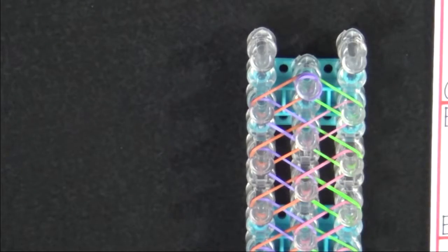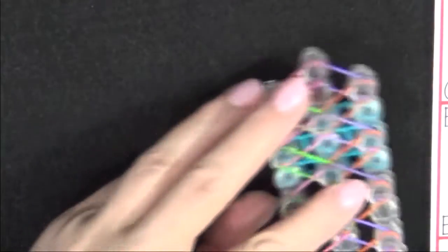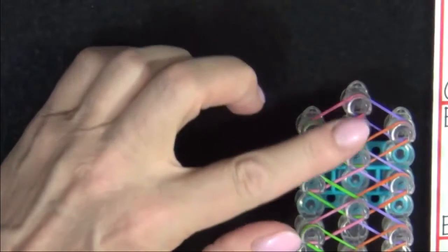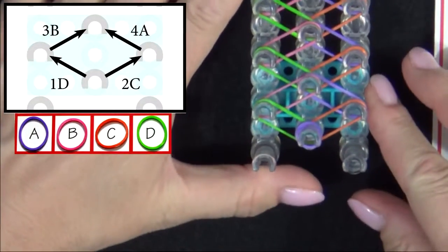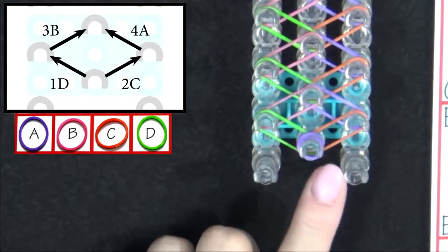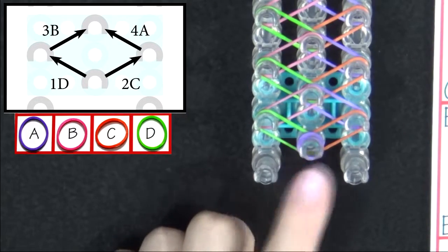Now we're ready to start looping the bands. Turn your loom so that the red arrow is pointing toward you. Refer to the diagram on your screen as we loop the first four bands. We'll start from the middle pin.